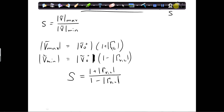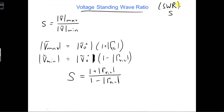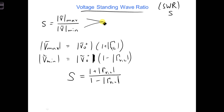The smallest VSWR we can get is 1. When we get 1, then Vmax and Vmin are equal, which means there is no standing wave ratio on the transmission line.